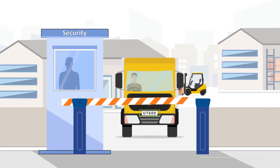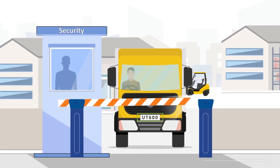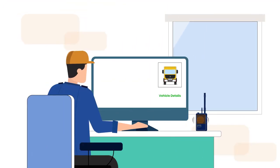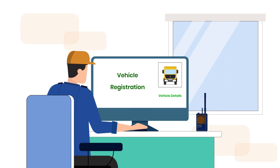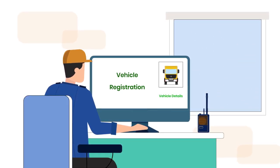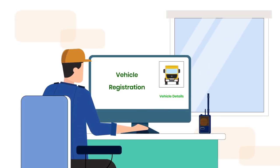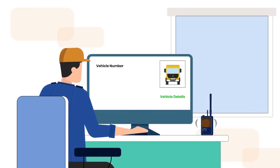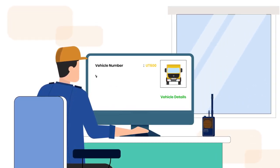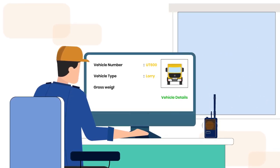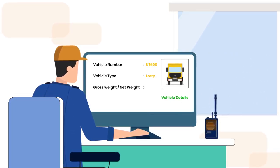He implements vehicle in and vehicle out related functions, including registering the vehicle as soon as it arrives at the warehouse. This includes vehicle details such as vehicle number and vehicle type, as well as the gross weight or net weight of the vehicle.